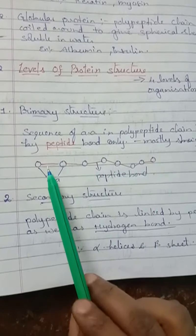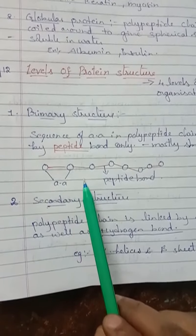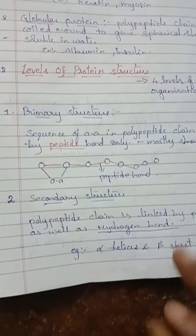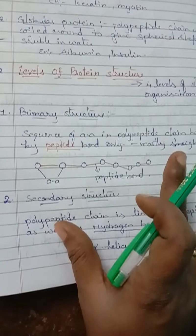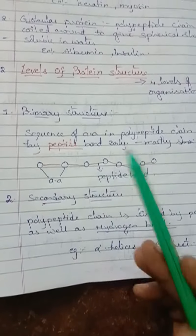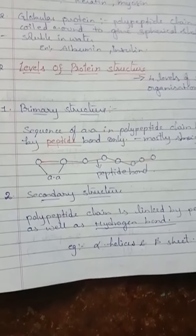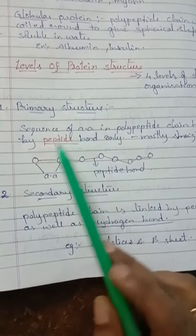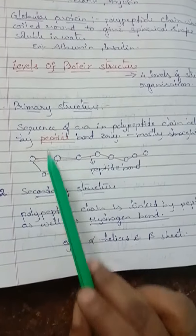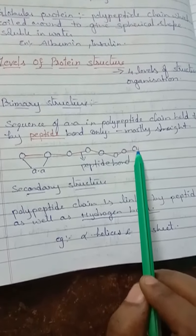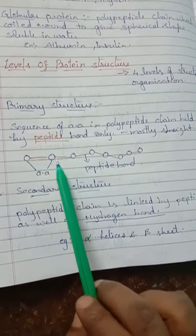If you see the primary structure, it will mostly be straight. The primary structure of a protein gives the sequence of amino acids. Any change in the primary structure can result in different proteins being formed. So in primary structure, the sequence of amino acids in a polypeptide chain is held together by peptide bonds only — no other bonds, only peptide bonds.